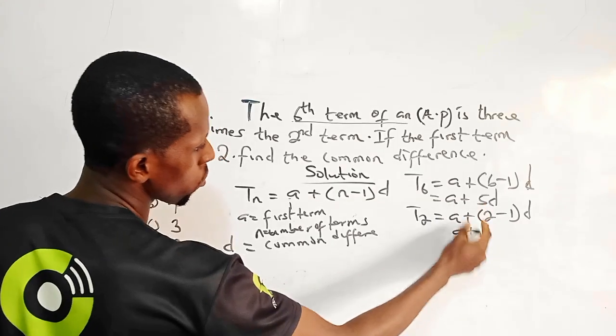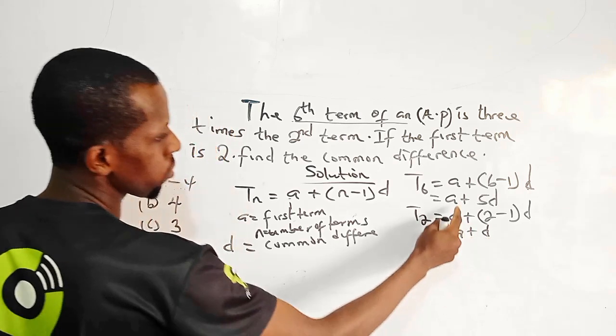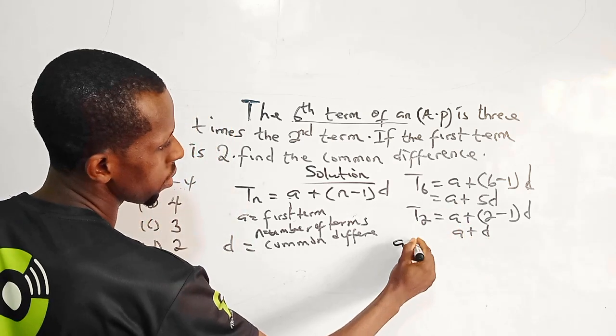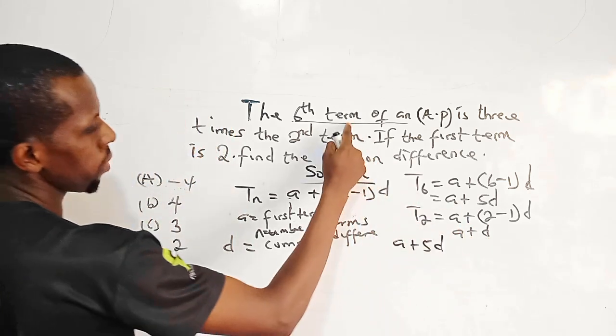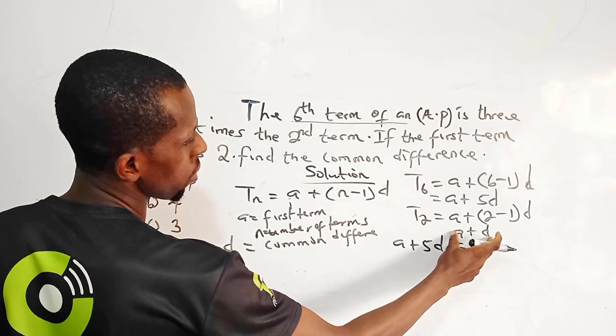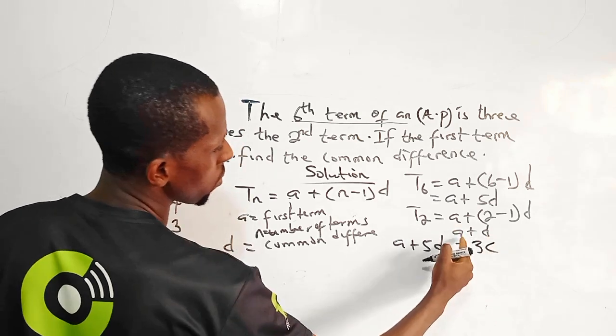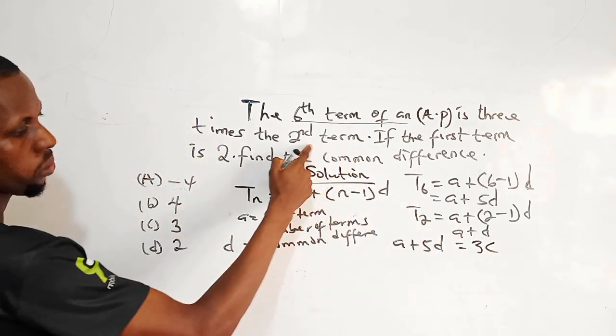But the sixth term equals 3 times the second term of an AP. So that means I will equate this to 3 times my result. So I will say a plus 5d, which is the sixth term, equals 3 times the second term.